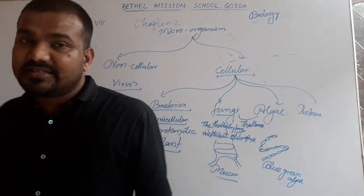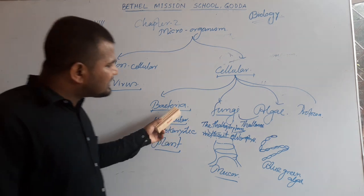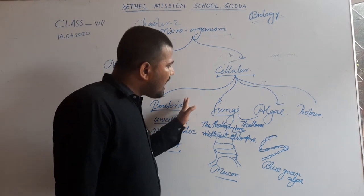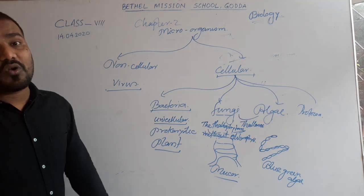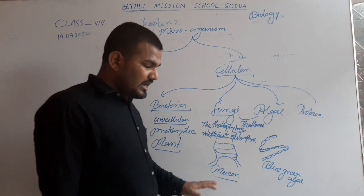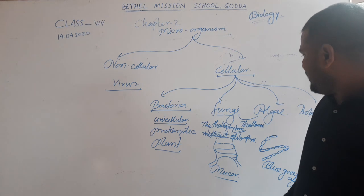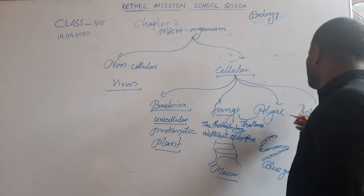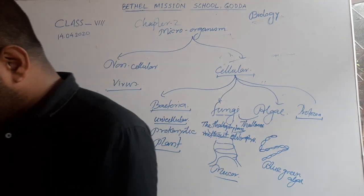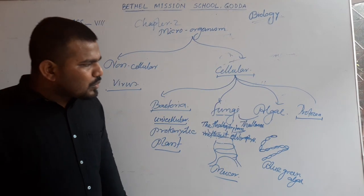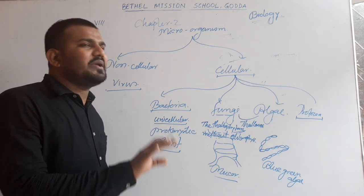Bacteria, fungi, and algae — these three types of organisms contain the cell wall, so they can be classified as belonging to the plant group due to the presence of the cell wall. The last cellular microorganism is protozoa. 'Proto' means primitive and 'zoa' means animals, so protozoans are primitive animals.